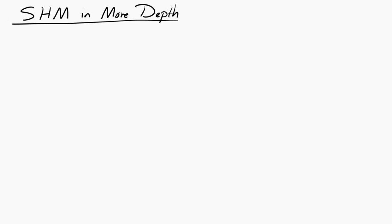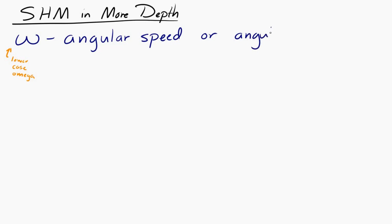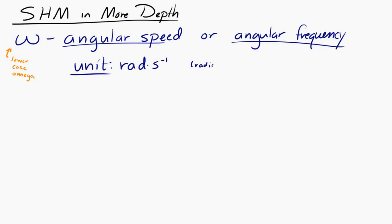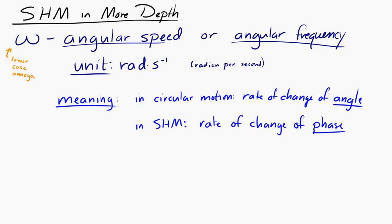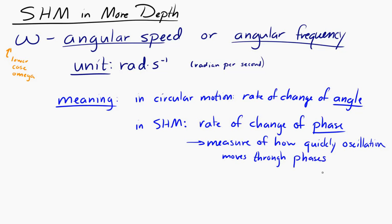Let's take a look at simple harmonic motion in a little more depth. We'll start by looking at this quantity represented by the lowercase omega, called either angular speed or angular frequency. The unit of angular speed or angular frequency is radians per second. We can interpret it a couple of different ways. In circular motion, it's the rate of change of the angle. In simple harmonic motion, it's the rate of change in the phase of the motion — how quickly an oscillation completes a 2 pi radian phase change, going through the entire cycle.